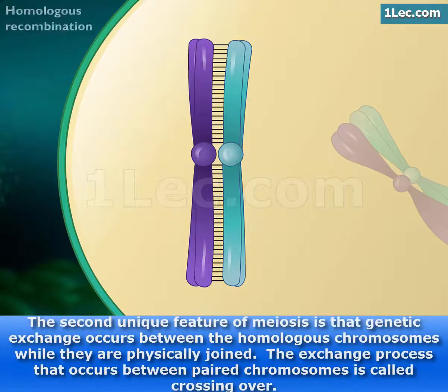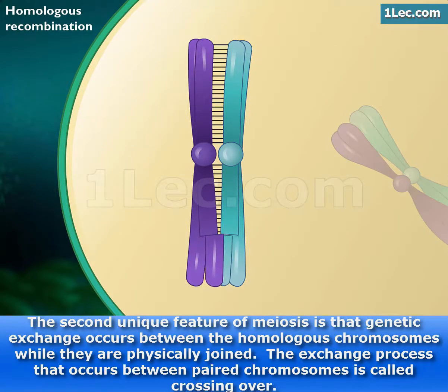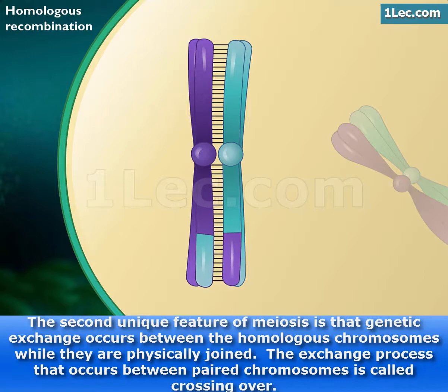The second unique feature of meiosis is that genetic exchange occurs between the homologous chromosomes while they are physically joined. The exchange process that occurs between paired chromosomes is called crossing over.